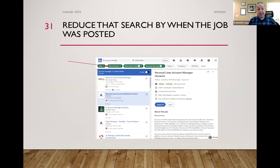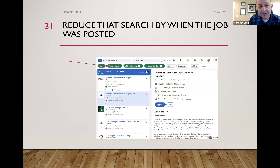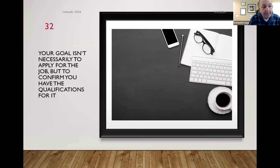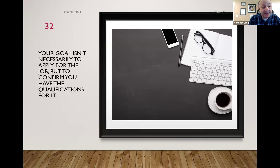Another way to search: filter jobs posted in the last 24 hours. I'll stop and say this — you don't apply for a job on LinkedIn. That's not a beneficial thing. You're much better off looking at the job, finding a company, finding someone at the company, and connecting with them there. When a recruiter gets applications, they get a list of everyone who applied from LinkedIn or online, and unless they have a recruiter seat — which costs tens of thousands of dollars — it's very hard to identify the best people.